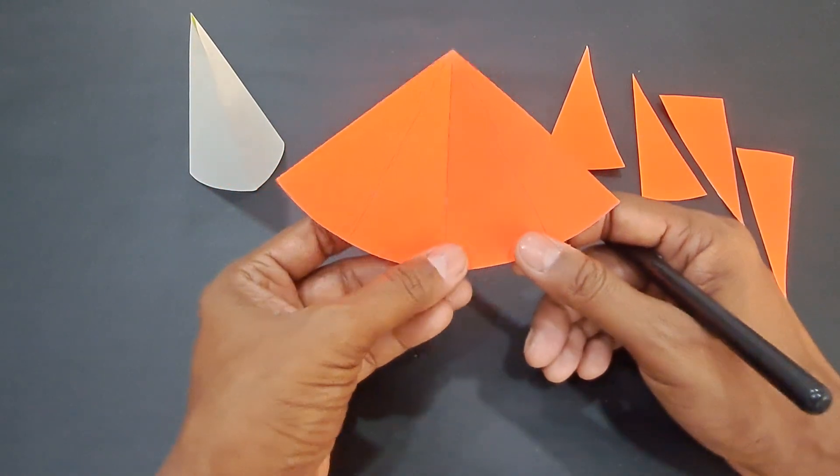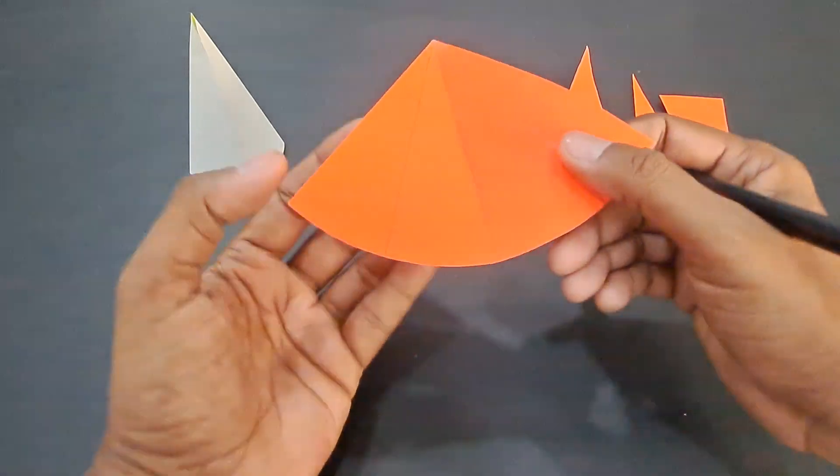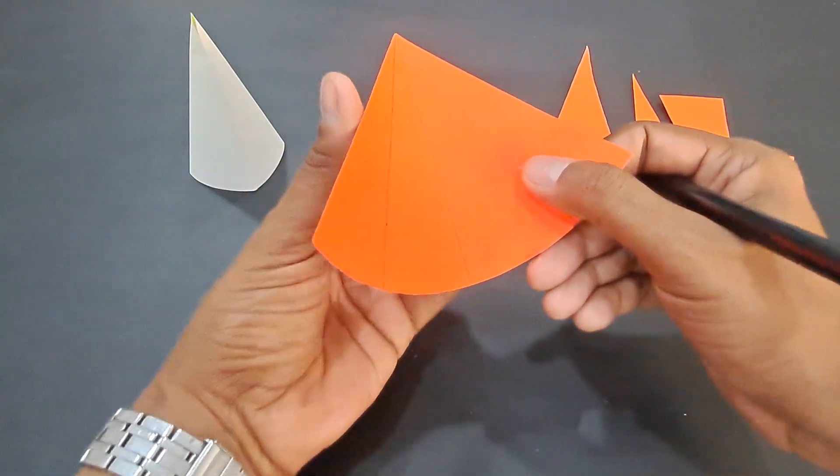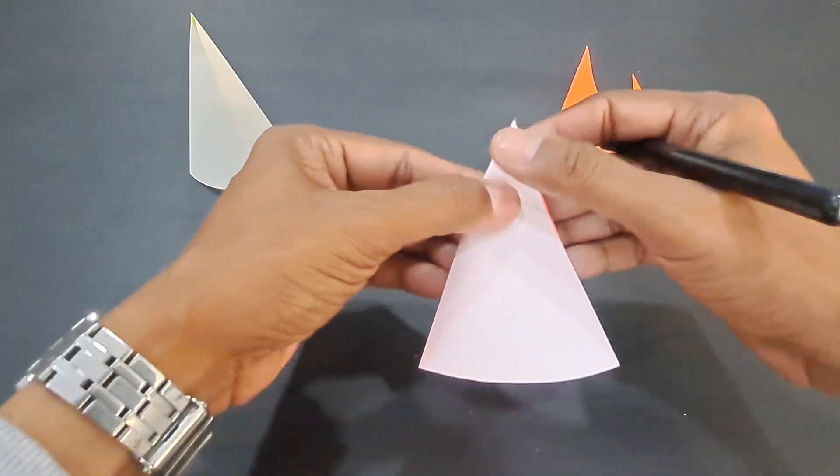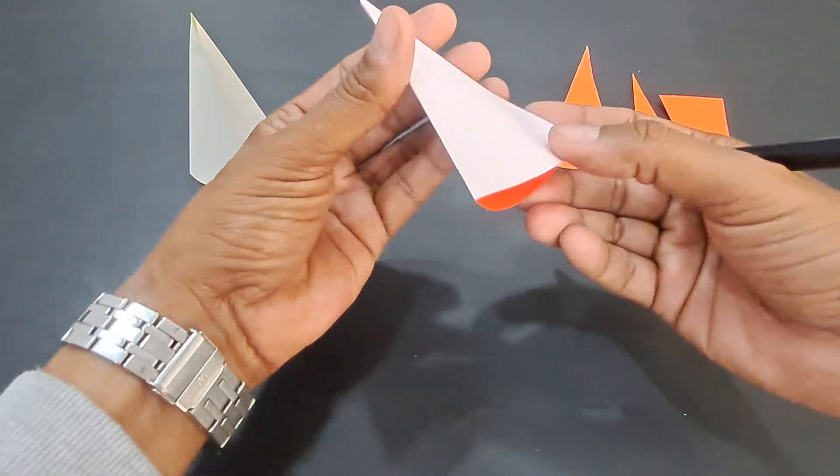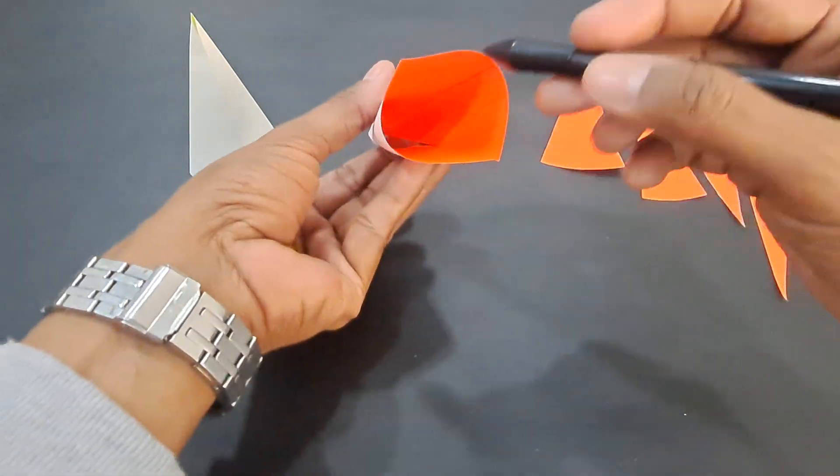You can cut a sector of a circle like this and then fold it in half along the radii like this and open it from the bottom to make a cone.